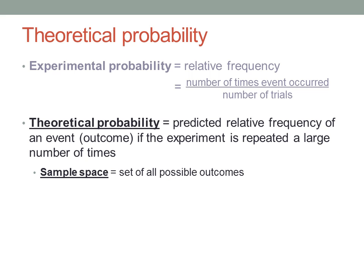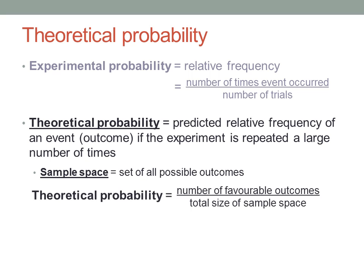If you know the sample space, the set of all possible outcomes, and the outcomes are all equally likely, then the theoretical probability is just the number of favorable outcomes divided by the total size of the sample space.